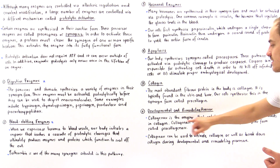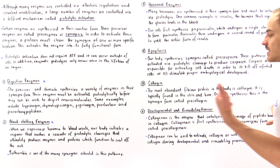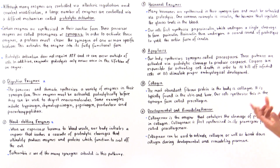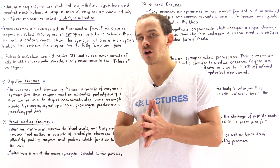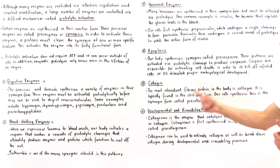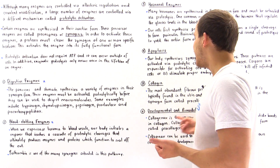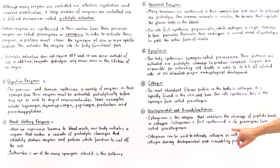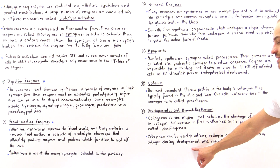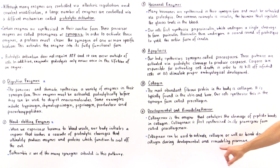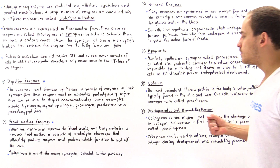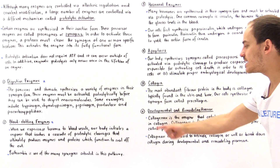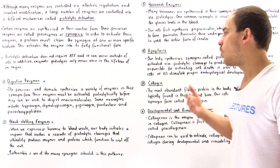Collagenase catalyzes the cleavage of peptide bonds in collagen — it can either activate the collagen molecule or break it down and destroy the collagen structure. This process is important in remodeling the extracellular environment as well as embryological development. Just as collagen exists in a zymogen form called procollagen, collagenase also exists in a zymogen form called procollagenase.